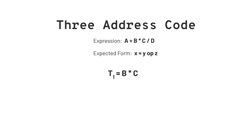Moving on to the operator with equivalent precedence, we can write t2 = t1 / d, where t2 will hold the result of b * c (that is t1) / d. Only the addition operator is left now, which gives us t3 = a + t2, where t3 holds the result of the entire expression. So this is three address code, and it can further be represented by three categories.